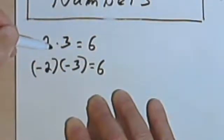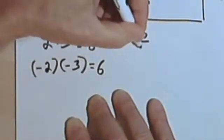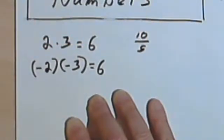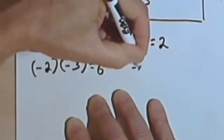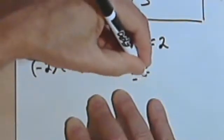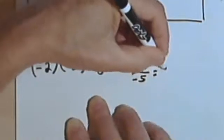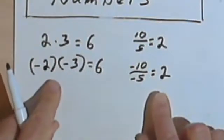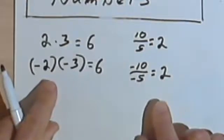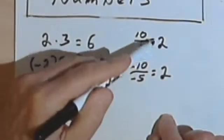This works for division also. If I have 10 divided by 5, that's 2. And if both signs are negative — negative 10 divided by negative 5 — I also get 2. So for multiplication and division, when the signs are the same, either both positive or both negative, you get a positive answer.